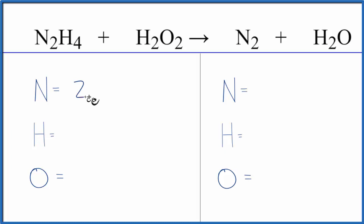We have two nitrogens, four hydrogens, plus we have these two here. Count those. Six hydrogens, two oxygens. On the product side we have the two nitrogens, two hydrogens, and one oxygen.